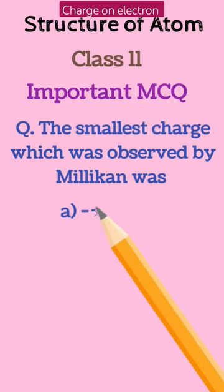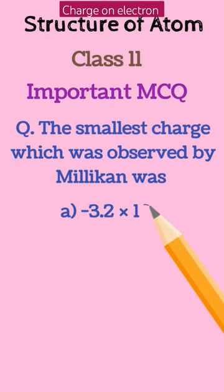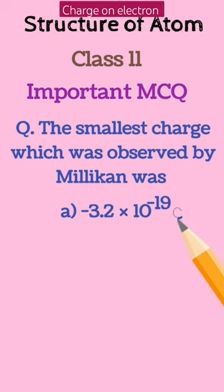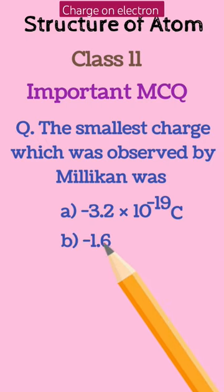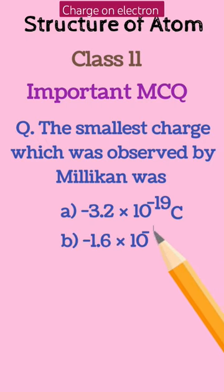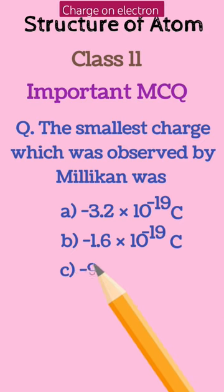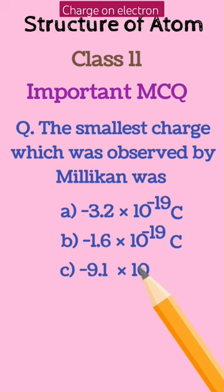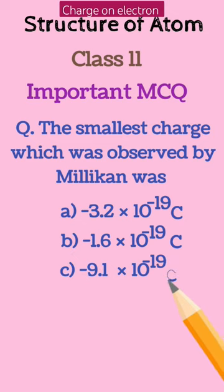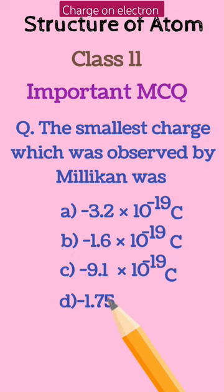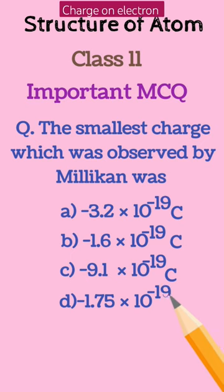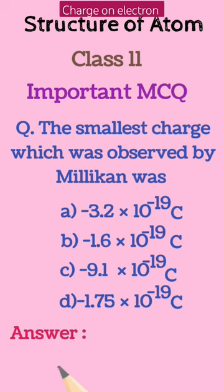The question is: the smallest charge which was observed by Millikan was — A. minus 3.2 into 10 to the power minus 19 coulomb, B. minus 1.6 into 10 to the power minus 19 coulomb, C. minus 9.1 into 10 to the power minus 19 coulomb, D. minus 1.75 into 10 to the power minus 19 coulomb. Its answer hai,